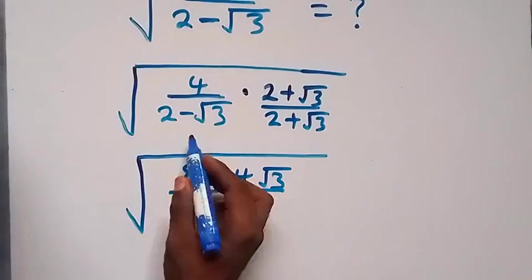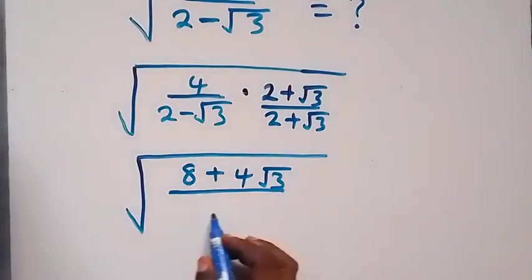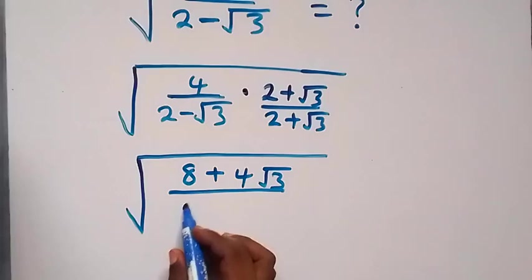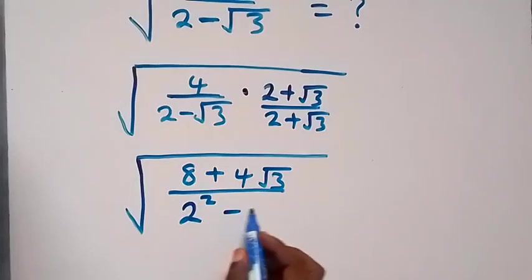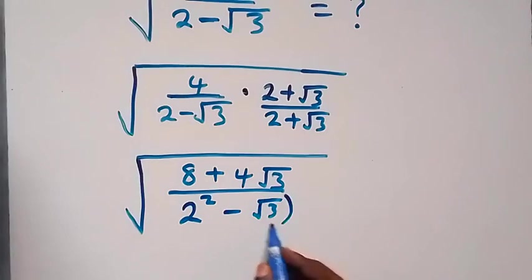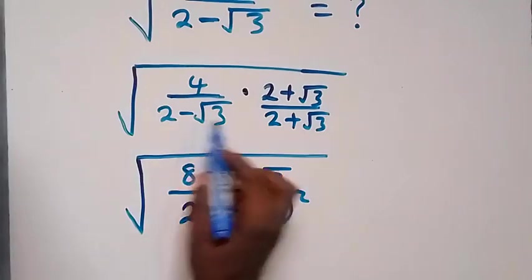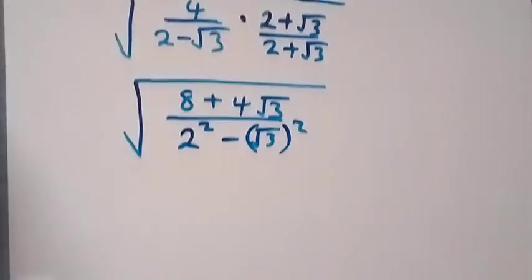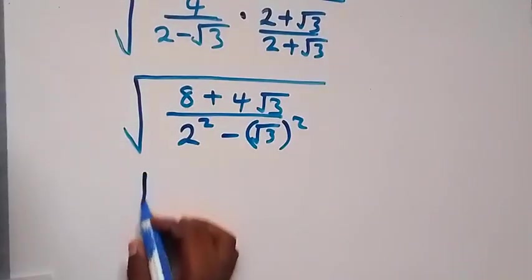What we have here is conjugate, which follows difference of two squares. That is when we have 2 squared minus root 3 squared, so it will give us this.